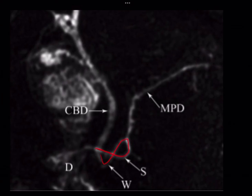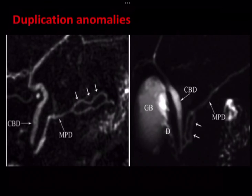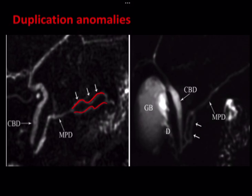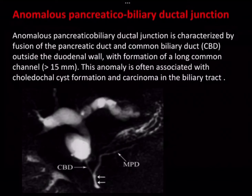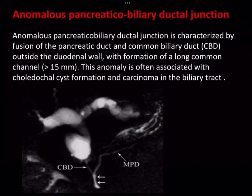On MRCP, we can see ansa pancreatica — the duct of Santorini taking a reverse S-shaped curve and communicating with the side branch of the duct of Wirsung. Next are duplication anomalies; on MRCP images we can see focal duplication of the pancreatic duct in multiple examples.